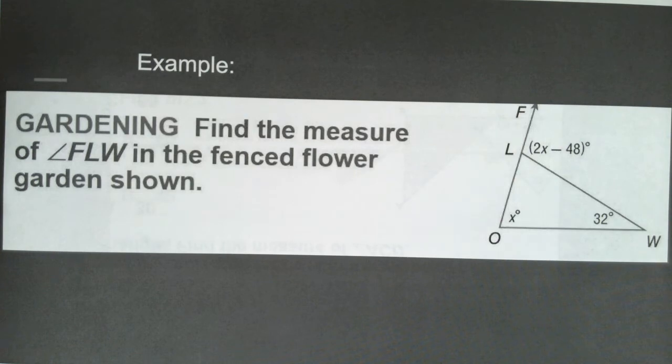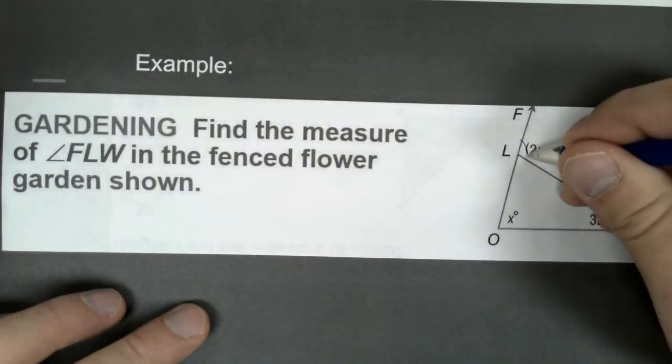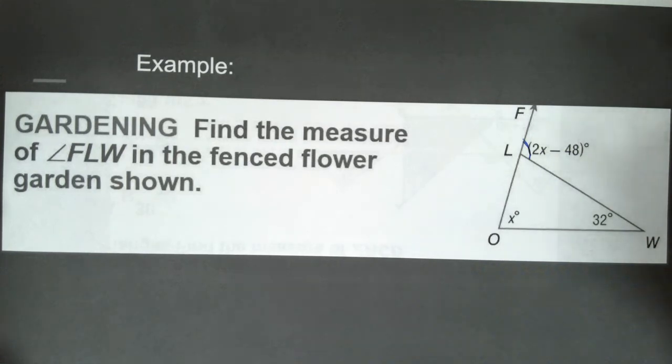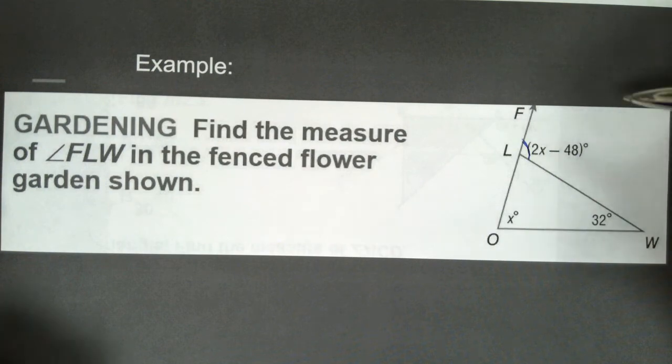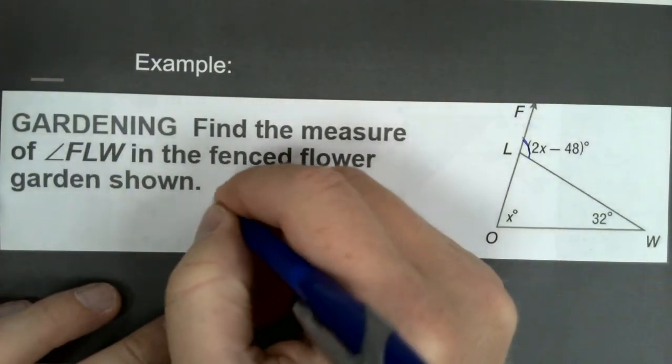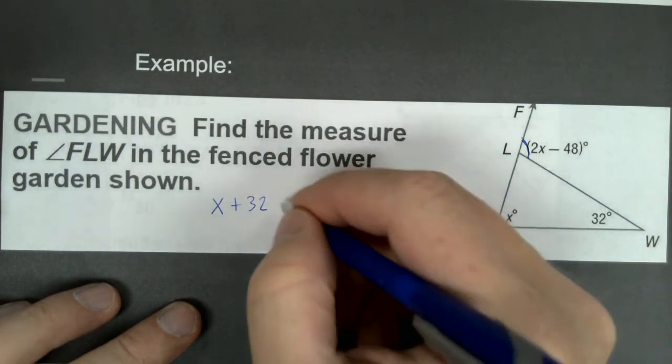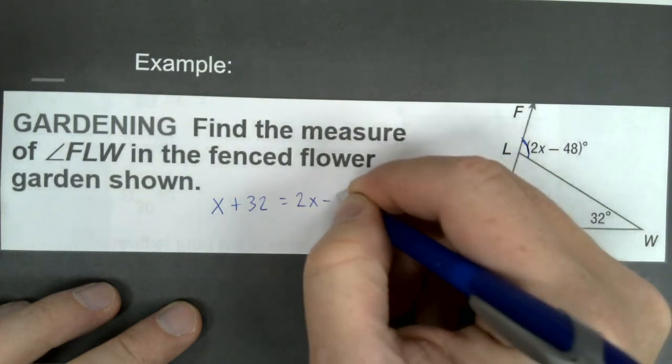So this is kind of a gardening example. It says find the measure of angle FLW, which FLW is this angle right here, in the fenced flower garden shown. So I know this is x, this is 32, this is my exterior. So these are my two remote interior angles. So I'm going to say x plus 32 is equal to my exterior angle, which is 2x minus 48.